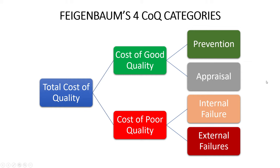He took this even further, saying that prevention and appraisal fall into the cost of good quality, and internal failures and external failures fall into the cost of poor quality. Collectively, these two categories make up the total cost of quality.